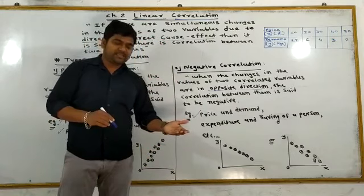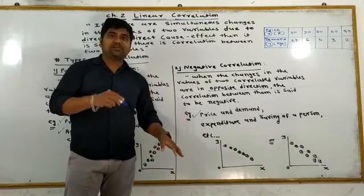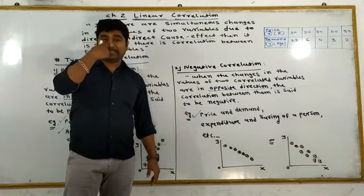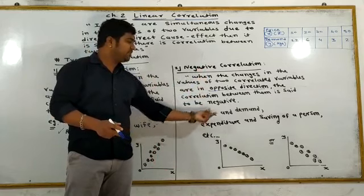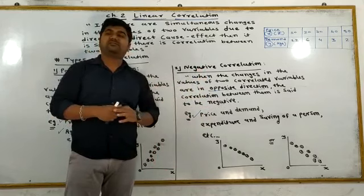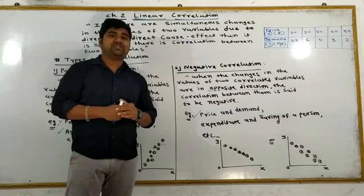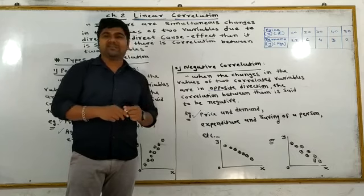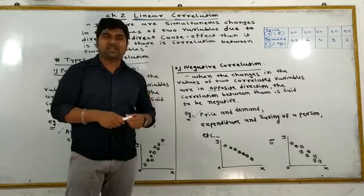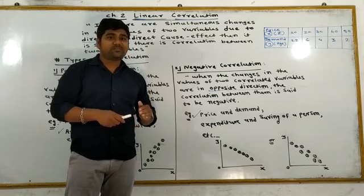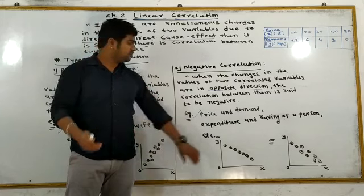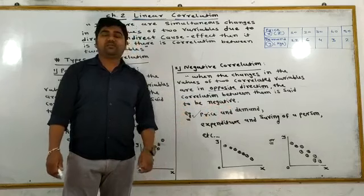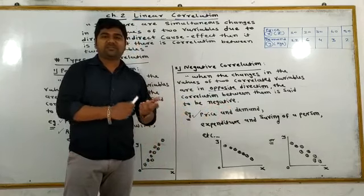If price decreases, then demand will decrease. Opposite direction changes. And supply, expenses, savings — if expenses increase, savings decrease. That is negative correlation, opposite direction.